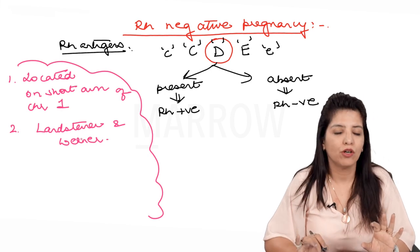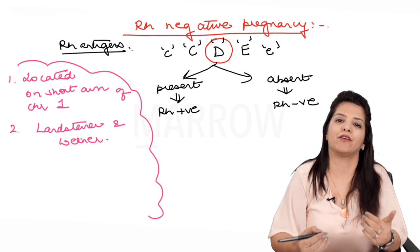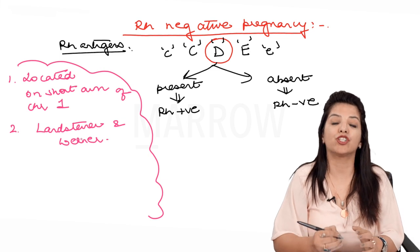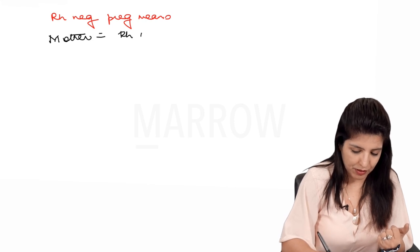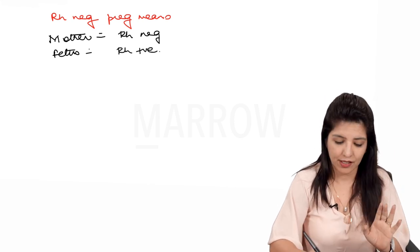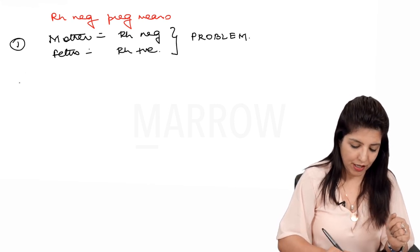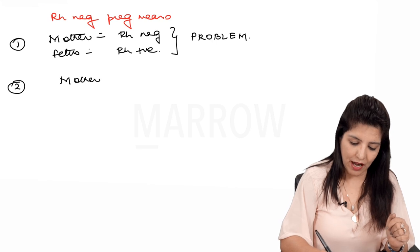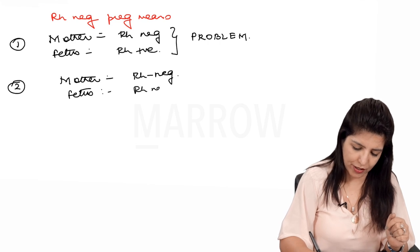So, RH positive means the D antigen is present, and RH negative means the D antigen is absent. RH negative pregnancy means that the mother is RH negative but the fetus she is carrying is RH positive. If this is the case, then there is a problem. But if both mother and fetus are RH negative, then there is no problem.